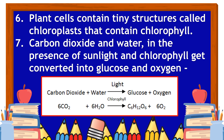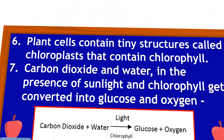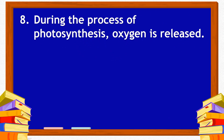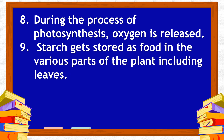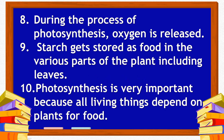During the process of photosynthesis, oxygen is released. Starch gets stored as food in the various parts of the plant, including leaves. Photosynthesis is very important because all living things depend on plants for food.